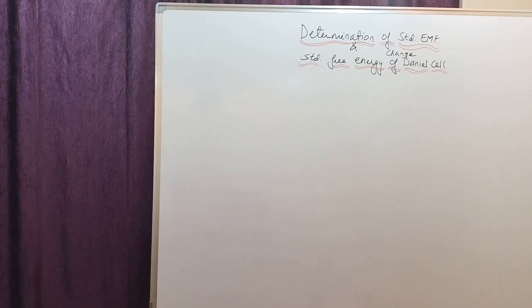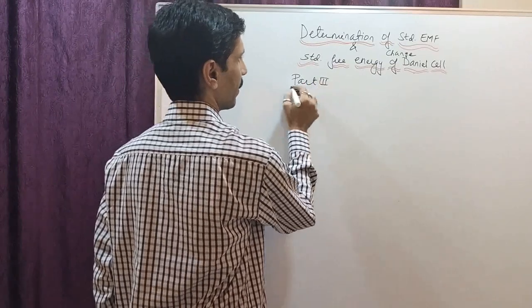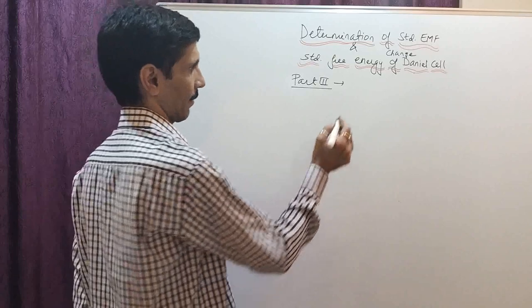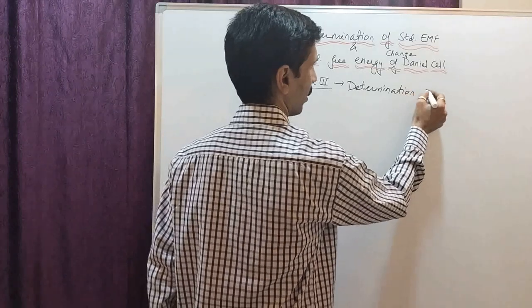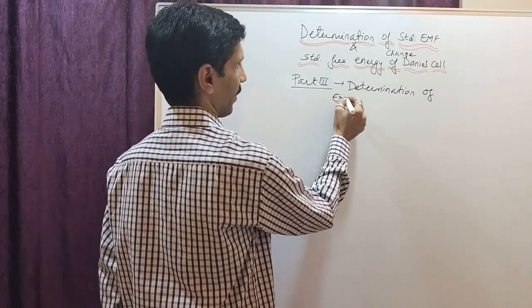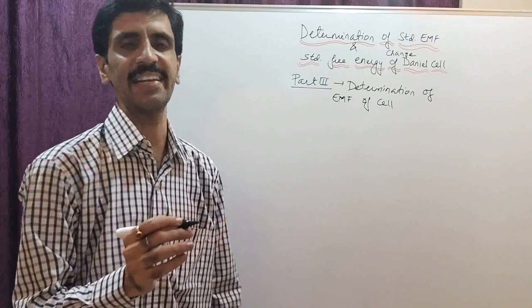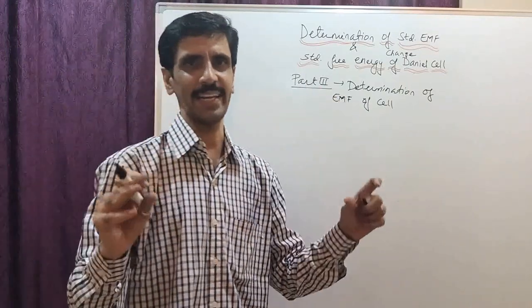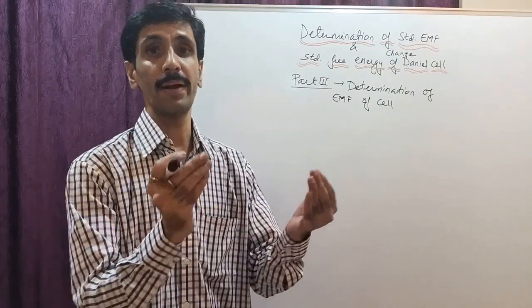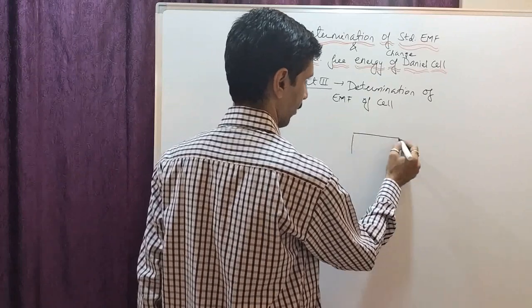Part 3 is the determination of EMF of the cell. We have prepared the solutions and standardized the potentiometer, so now we are ready for determination of EMF of the Daniel cell. Instead of writing, I will explain by means of block diagrams for better understanding. We have a potentiometer — just a block diagram, not the actual diagram — with a display, a knob for adjustment, and two terminals for standardization.